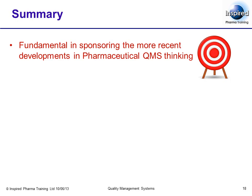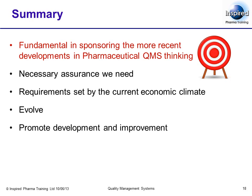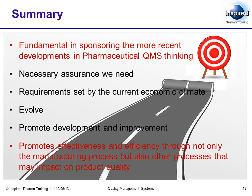In adopting either the FDA model or the ICH model as either a design criteria baseline or improvement baseline, we begin to address those numerous concerns about the adequacy of traditional GMP. We asked whether our system provides the necessary assurance we need and meets requirements set by the current economic climate, whether our current system can evolve and promotes development and improvement, and whether it embraces contemporary quality management system thinking. We also asked if our current system promotes effectiveness and efficiency through not only the manufacturing process but also other processes that can impact on product quality. A fairly large part of both the FDA and ICH system models begin to sponsor an evolutionary journey — and a journey in the right direction.